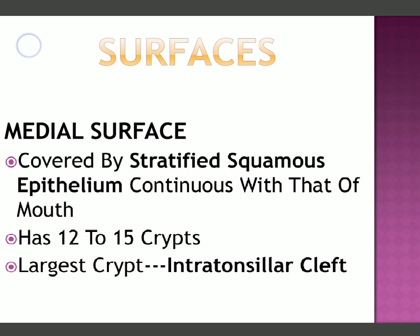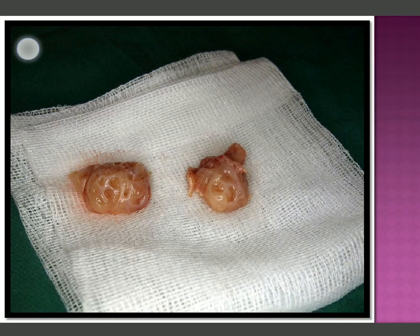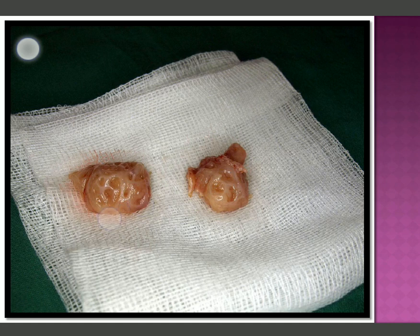The largest crypt among these is called the intra-tonsillar cleft. A cleft is a structure that divides a part partially or completely into two halves. The medial surface of the palatine tonsils shows all the crypts, with many small crypts visible on its surface.